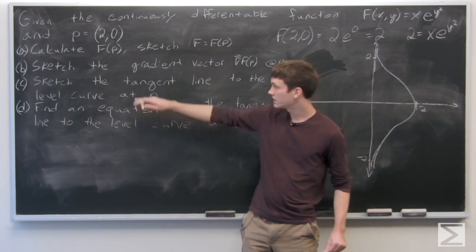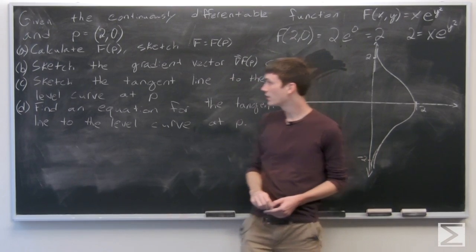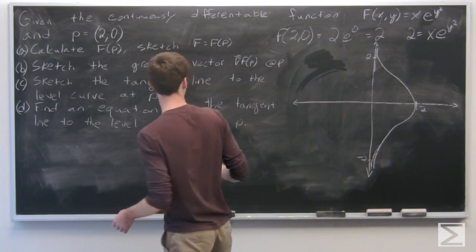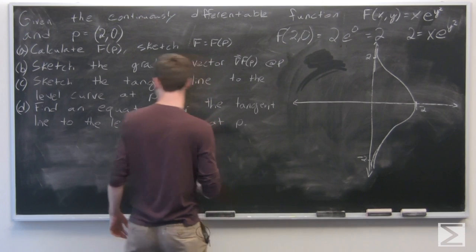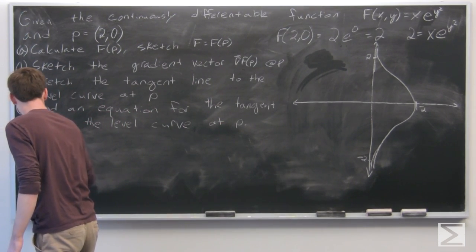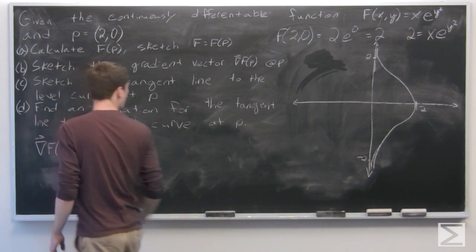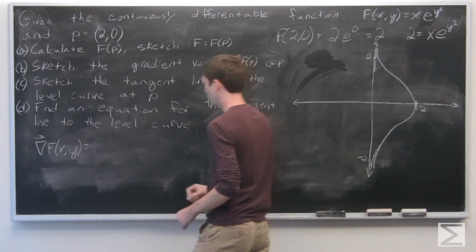So we want to sketch the gradient vector, the gradient of f at p. So first the gradient vector we'll calculate is partial derivative with respect to x